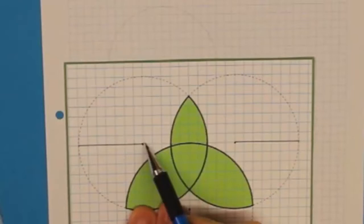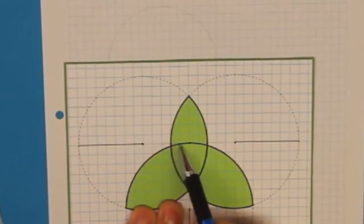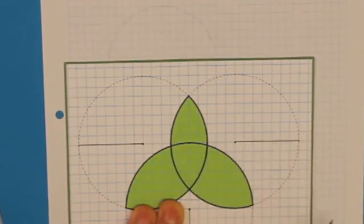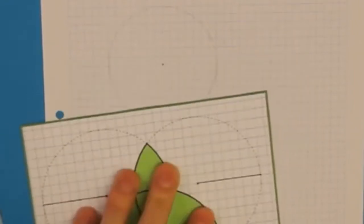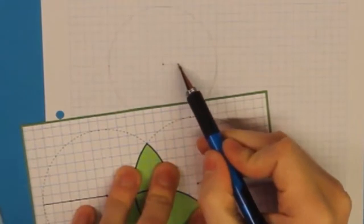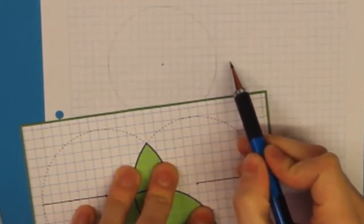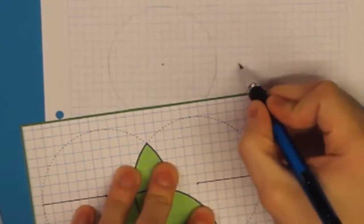Das sind genau eins, zwei, drei, vier, fünf, sechs, sieben, acht, neun, zehn Kästchen. Machen wir das gleich auf unserer Zeichnung. Zählen wir also zehn Kästchen von einem Mittelpunkt nach rechts. Genau. Und markieren dort diesen Mittelpunkt.